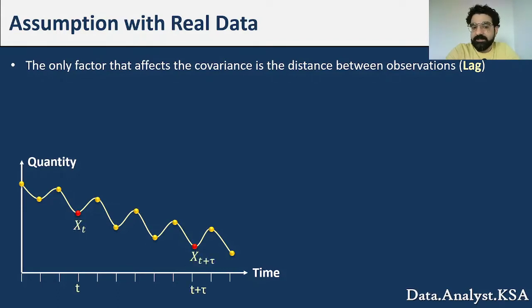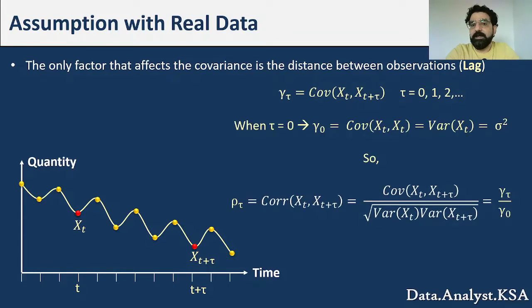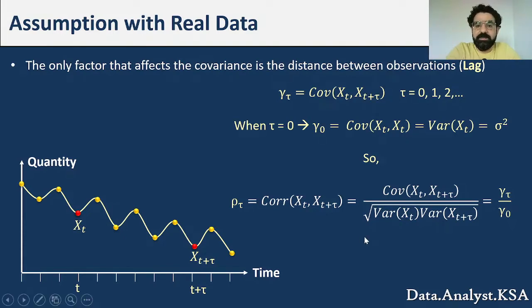To denote this formally: the covariance of X(T) and X(T+tau) is equal for any tau. So gamma(tau) equals the covariance of X(T) and X(T+tau), where tau can be 0, 1, 2, and so on. When tau equals 0, gamma(0) is the covariance of X(T) with itself, which is the variance, equal to sigma squared.